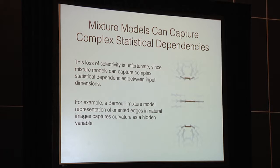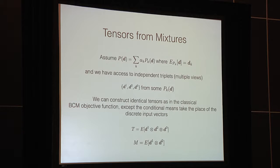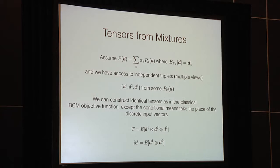Mixture models are a much richer and more interesting input distribution. For example, Bernoulli mixture models applied to natural images of edges and lines reveal that curvature is an important fundamental feature of these edge distributions. So we want to learn mixture models with a rule of this type. Our input model will change: we assume data vectors are drawn from some mixture distribution, with k different mixtures. We assume k < n, the dimension of the space, and the expected value of the data vector conditioned on mixture k is d_k. These class conditional means take the place of the discrete data vectors in the classical BCM learning rule.